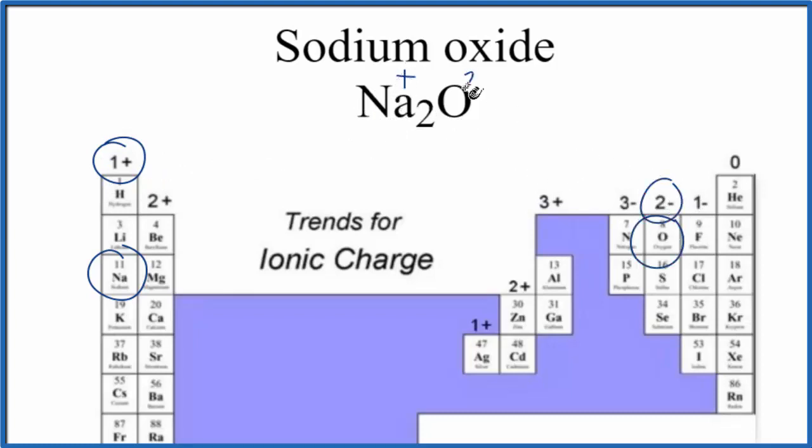Oxygen, that has a 2 minus. So we need two of these sodium atoms, each one has a 1 plus, to balance out the oxygen atom, which has a 2 minus. Because they're opposite charges, they'll be attracted, and they'll form an ionic bond.